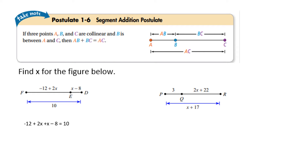That gives the equation: negative 12 plus 2x plus x minus 8 equals 10. Combining like terms gives 3x minus 20 equals 10. Adding 20 to both sides gives 3x equals 30. Dividing both sides by 3 gives x equals 10.